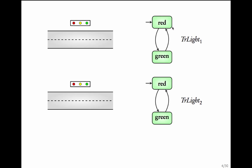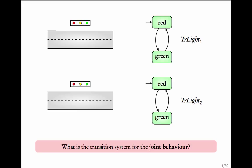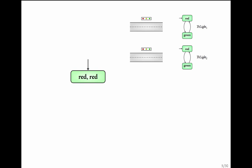The traffic light of this road is represented by the simple transition system: from red it can go to green, and from green it can go back to red. This is a simple model; it does not consider the intermediate yellow light. Similarly, for the other parallel road there is a traffic light which is modeled by the same transition system. How do we model the joint behavior of the system consisting of two traffic lights?